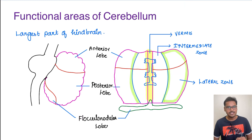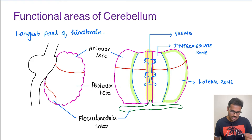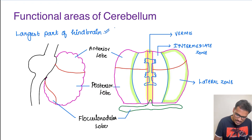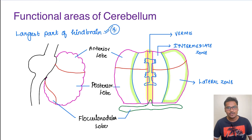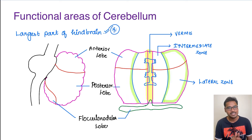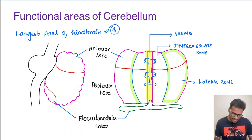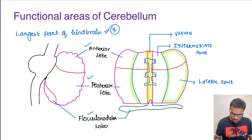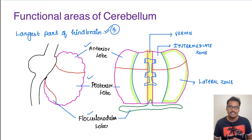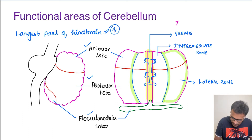Coming to the functional areas of the cerebellum — anatomically there are several divisions, but we are not going into those details. Functionally it is divided into certain lobes and certain zones. The cerebellum, as we all know, is the largest part of the hindbrain, and its major functional role is coordination of movement. Anatomically, the cerebellum is divided into anterior lobe, posterior lobe, and flocculonodular lobe. Functionally, it is divided longitudinally into three zones called functional zones.